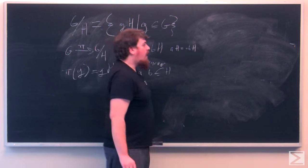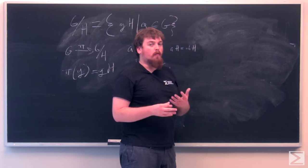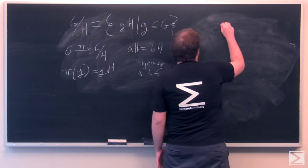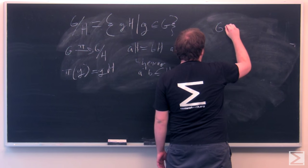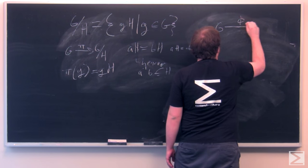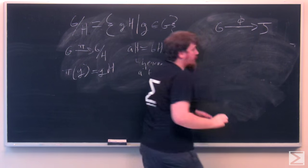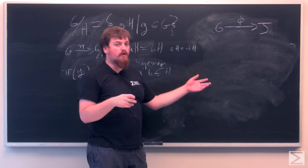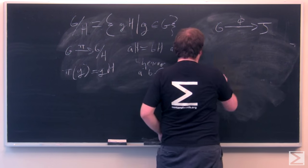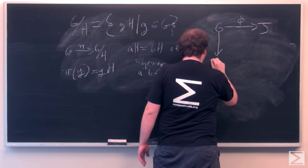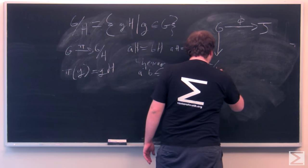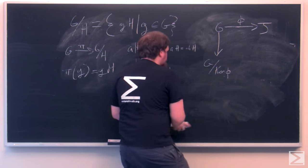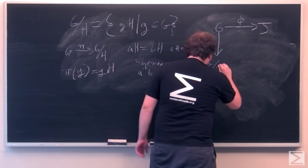But more importantly, because any kernel of a homomorphism is a normal subgroup, we can do a pretty interesting thing with that. If you write some homomorphism phi from G to J, where G and J are groups, the kernel of phi is a normal subgroup of G, and so we can form the quotient group G mod ker phi. And then we'll call this ker phi H, so it's easier to say.